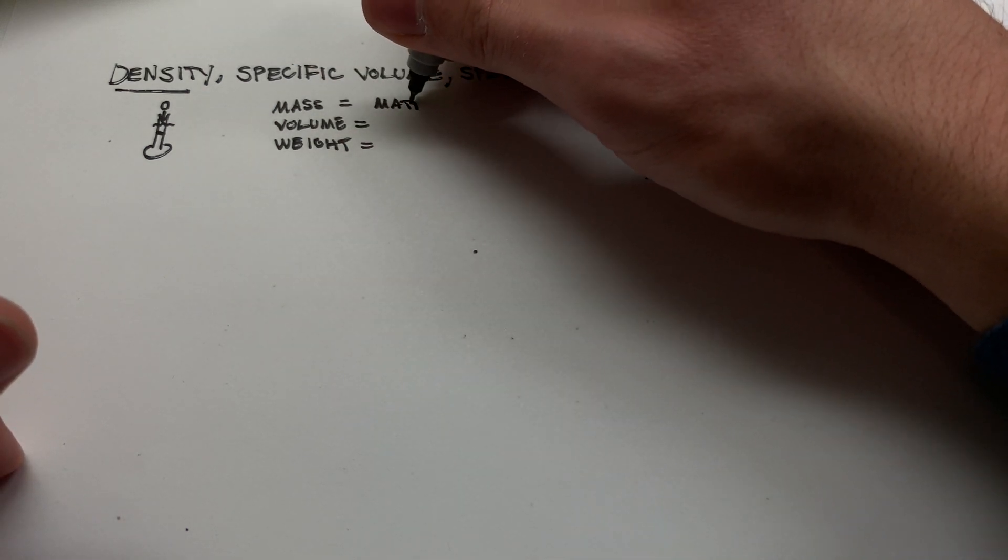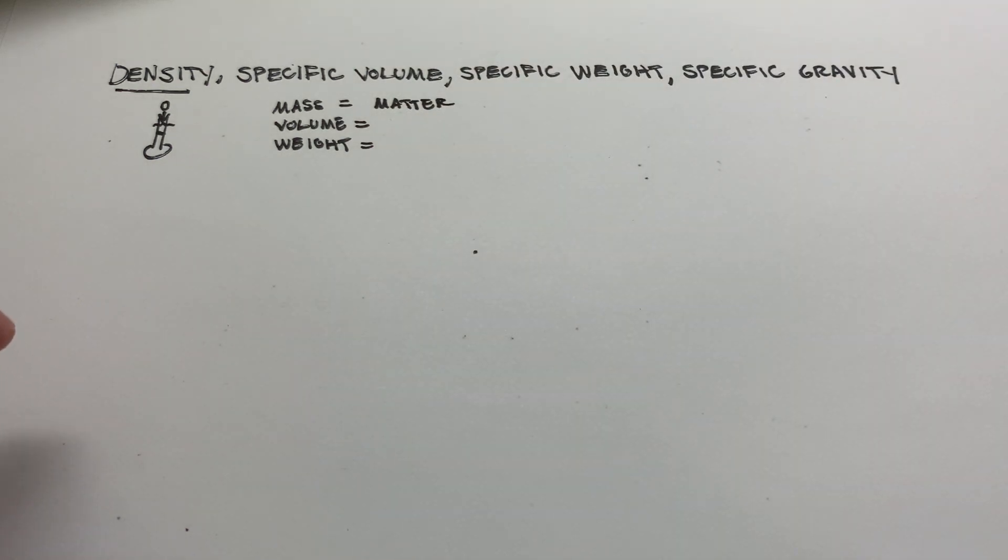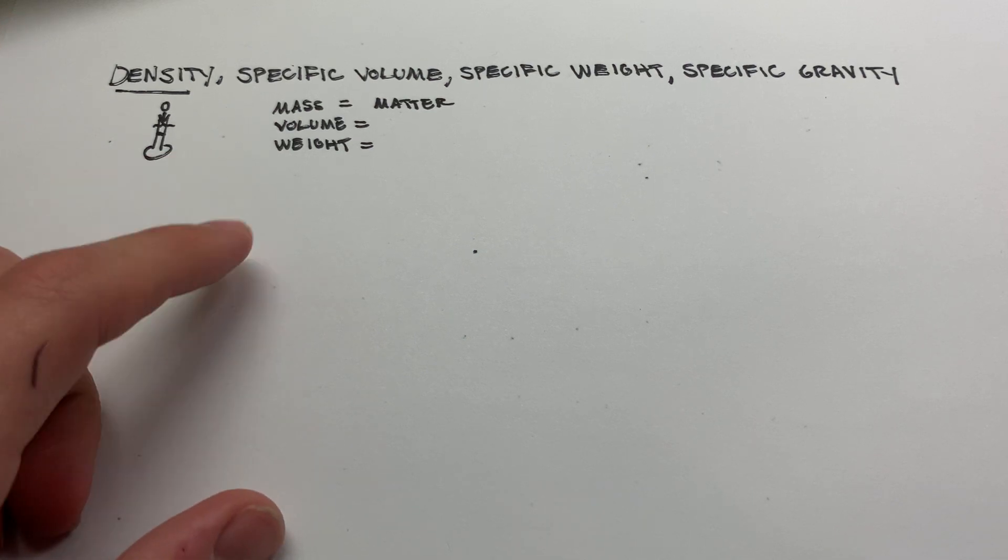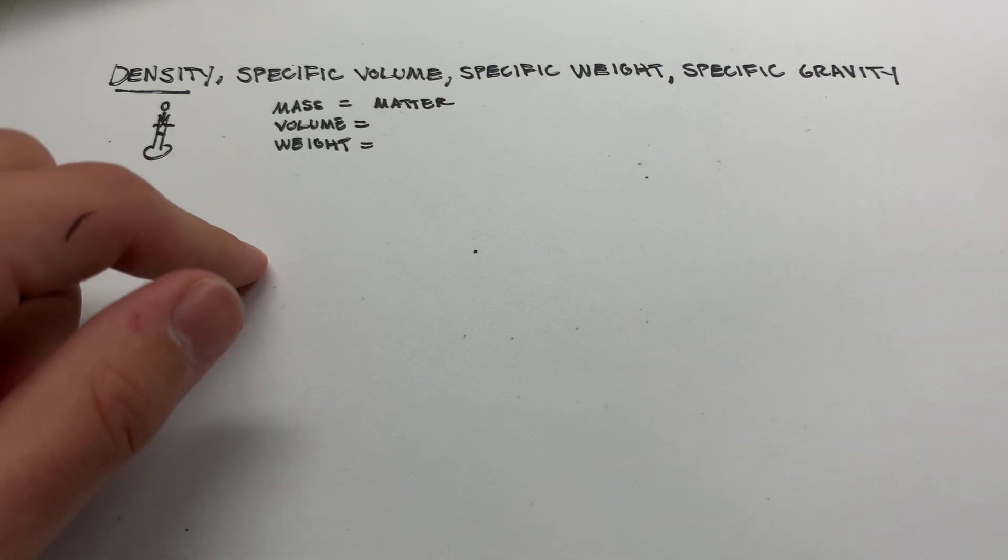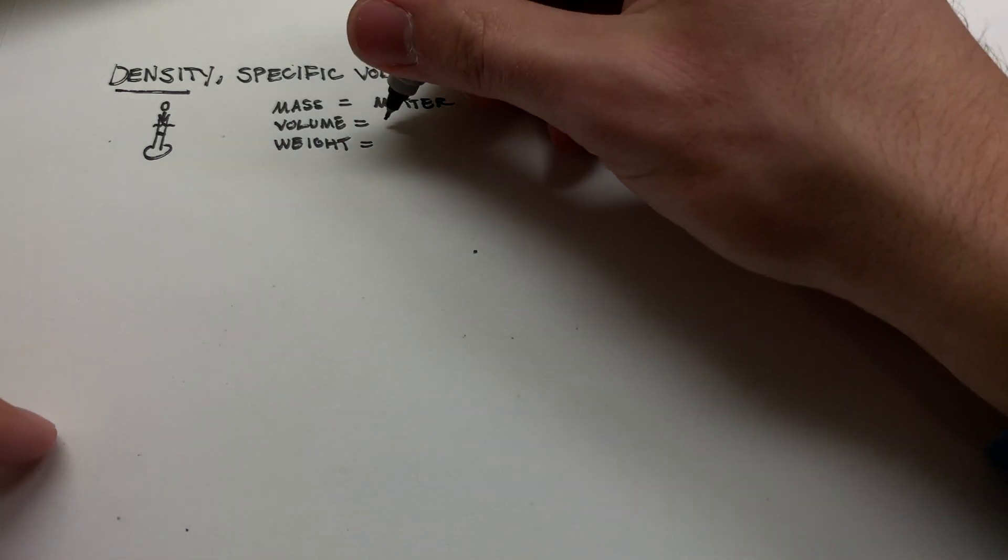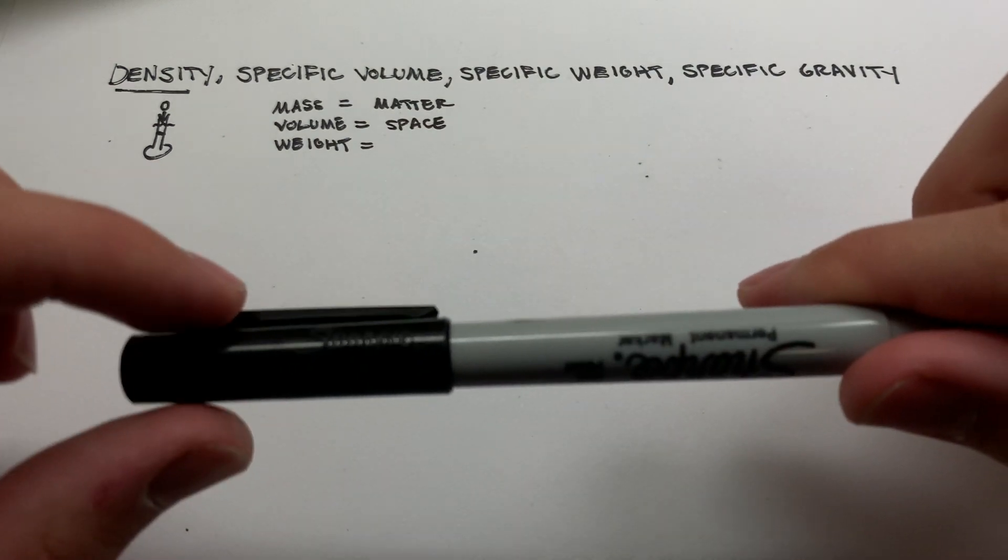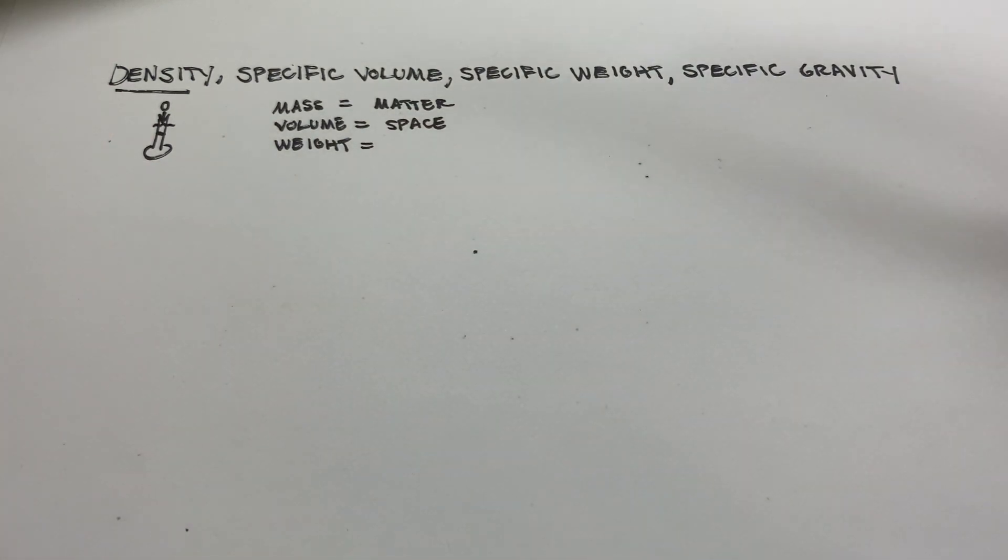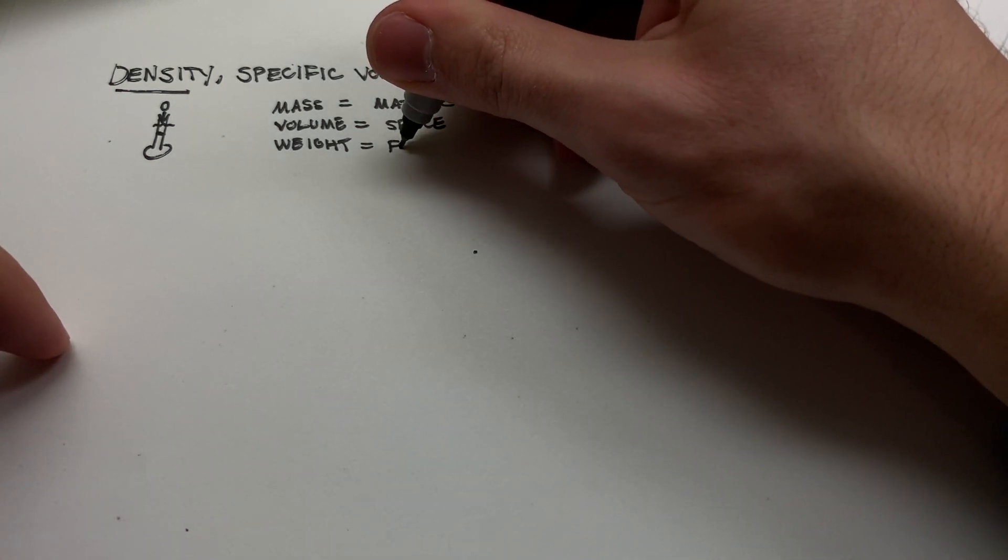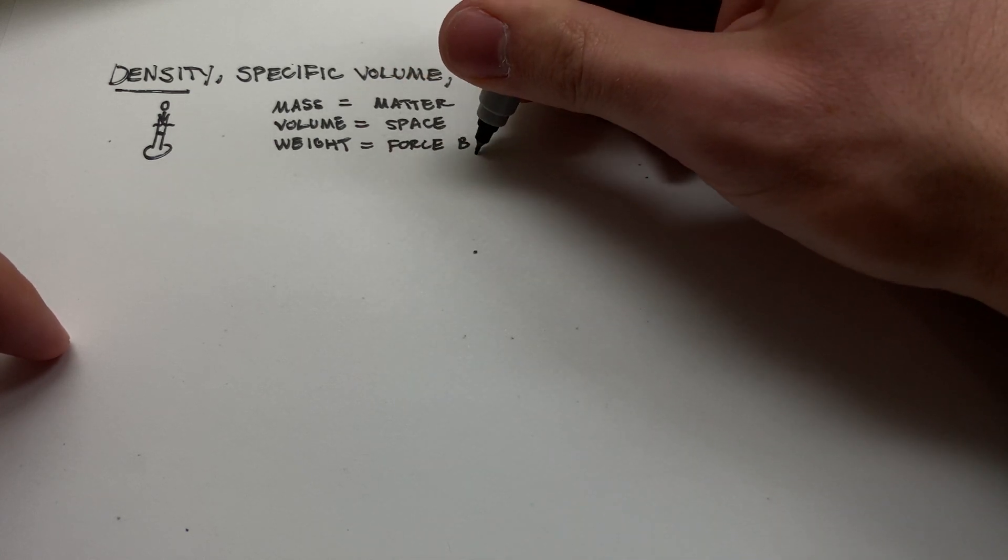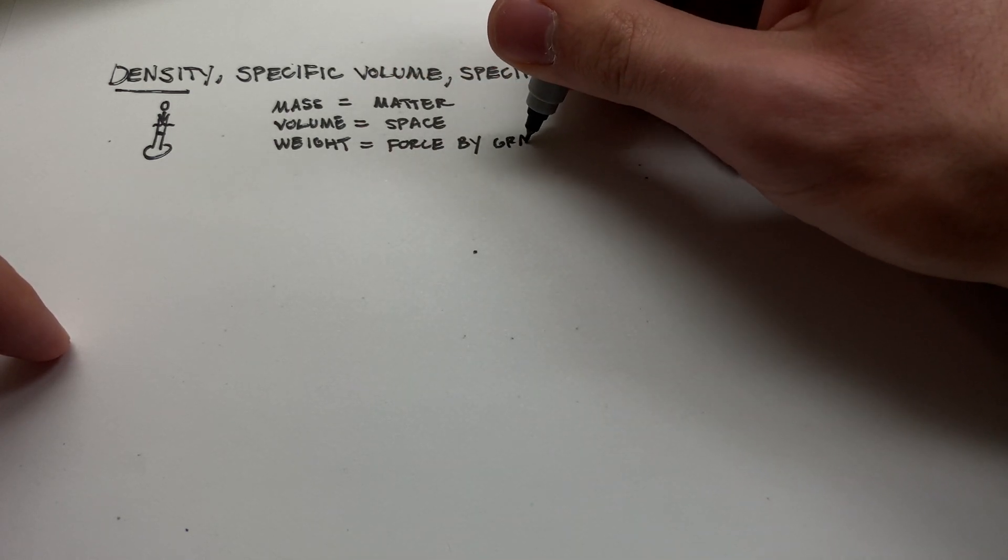Mass is simply a measure of the matter in an object, right? So this goes back to our very fundamentals: atoms, protons, neutrons, electrons. How much stuff is contained in an object, in a human being like you or me, in a piece of paper, in a pen, in any of these things? Volume is related to how much space something takes up. For example, this pen takes up much less volume than my physical human body. And finally, weight is a measure of the force exerted by gravity on an object.